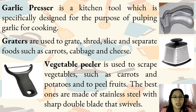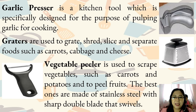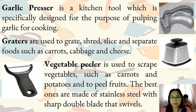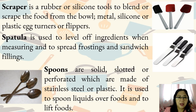Garlic presser is a kitchen tool specifically designed for the purpose of pulping garlic for cooking. Graters are used to grate, shred, slice, and separate foods such as carrots, cabbage, and cheese. Vegetable peeler is used to scrape vegetables such as carrots and potatoes and to peel fruits. The best ones are made of stainless steel with a sharp double blade that swivels. Scraper is a rubber or silicone tool to blend or scrape food from the bowl.